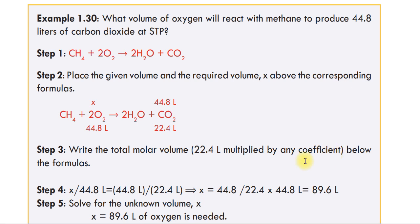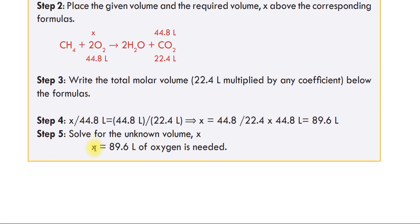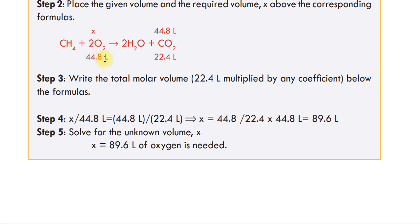Step 3: Write the total molar volume — that is 22.4 L — multiplied by the coefficient below each formula. Set up the proportion: x over (2 × 22.4) equals 44.8 over 22.4.